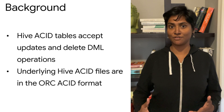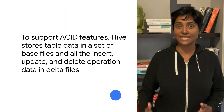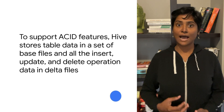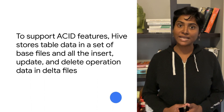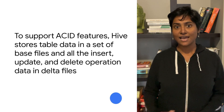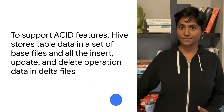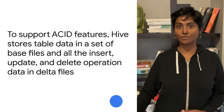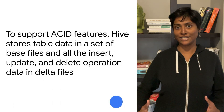Underlying Hive ACID table files are in ORC ACID format. To support ACID features, Hive stores stable data in a set of base files, and all the insert, update, and delete operations are stored in delta files. It creates a lot of small delta files, and then Hive Metastore runs major compactions in the Hadoop cluster to consolidate these base files and delta files into a single file or into a more manageable file set.